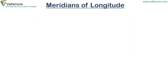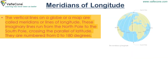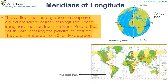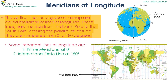The vertical lines on a globe or a map are called meridians or lines of longitude. These imaginary lines run from the north pole to the south pole, crossing the parallels of latitude. They are numbered from 0 to 180 degrees. Some important lines of longitude are the Prime Meridian at 0 degrees and the International Date Line at 180 degrees.